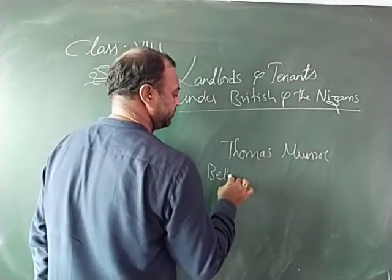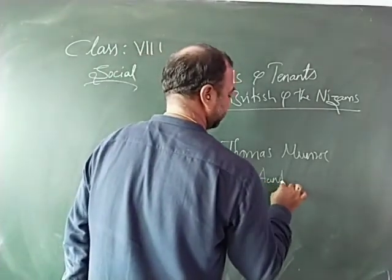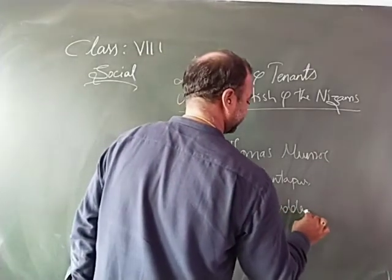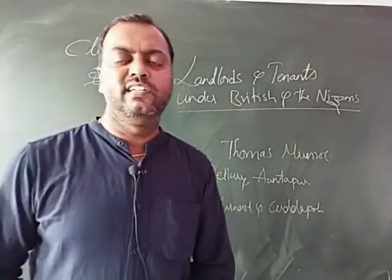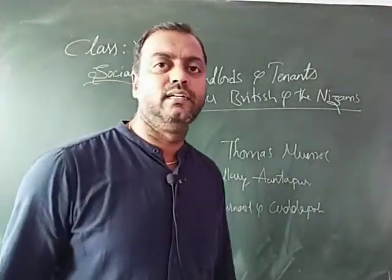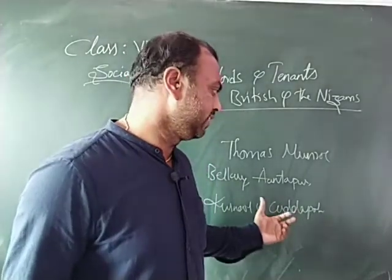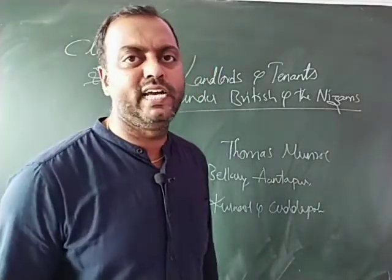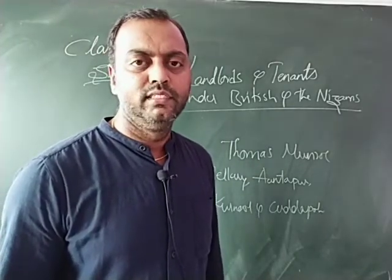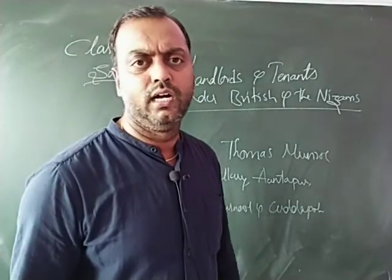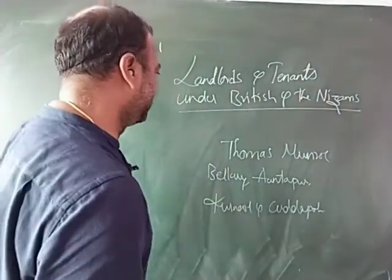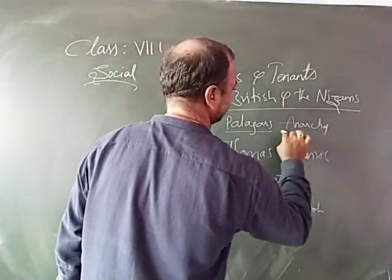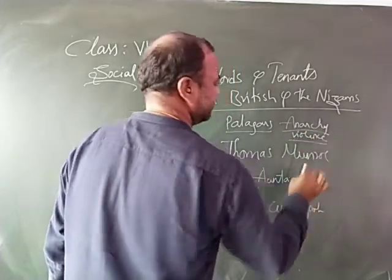Thomas Munro was appointed as district collector of Bellary (presently in Karnataka), Anantapur, Kurnool, and Kadapa — the four ceded districts handed over to the Britishers by the Nizam government. At that time, these ceded districts had a serious problem of Palayegars, who owned small bands of soldiers and created a lot of anarchy and violence in the area.